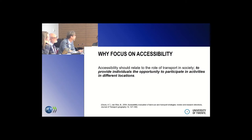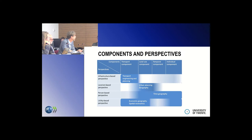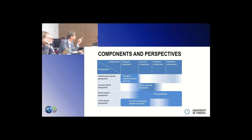Why are we looking at accessibility? This has to do with the role of transport in society, providing people, individuals, and firms opportunities to participate in different locations. I typically distinguish between four components of accessibility and four different perspectives, and I will use this as a starting point to structure the presentation.